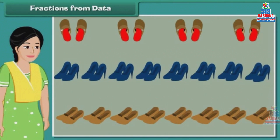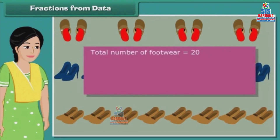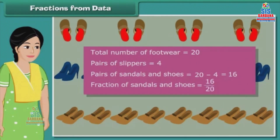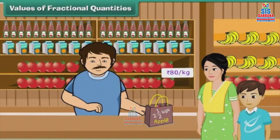Consider another example. Rishabh's mother owns 20 pairs of footwear. Out of these 20 pairs, 4 pairs are slippers and the rest are all sandals and shoes. What is the fraction of sandals and shoes owned by Rishabh's mother? Total number of footwear is equal to 20. Pairs of slippers are 4. Pairs of sandals and shoes are 20 minus 4, which is 16. Fraction of sandals and shoes is 16 by 20, which equals 4 by 5.